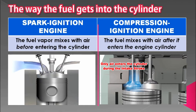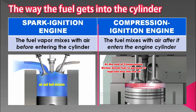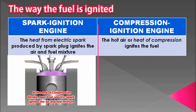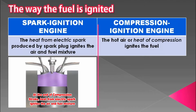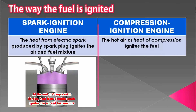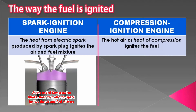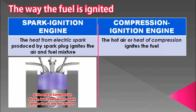The third difference between the spark ignition engine and the compression ignition engine is the way the fuel is ignited. In the spark ignition engine, the heat from an electric spark produced by the spark plug ignites the air and fuel mixture. During the intake stroke, the air-fuel mixture is drawn in, then after compression, the spark plug fires to ignite the mixture and produce the power stroke.